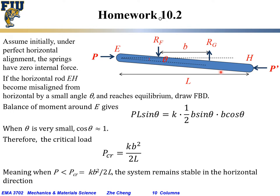Because P and P are assumed perfectly parallel but now displaced from each other slightly, this pair of forces tries to rotate the EH rod clockwise. In order to balance the moment, we need the spring forces to counteract it. The force at G is tension, and the force at F is compression — meaning RG is pulling up and RF is pushing down. This pair of forces gives a counterclockwise moment to balance the clockwise tendency.